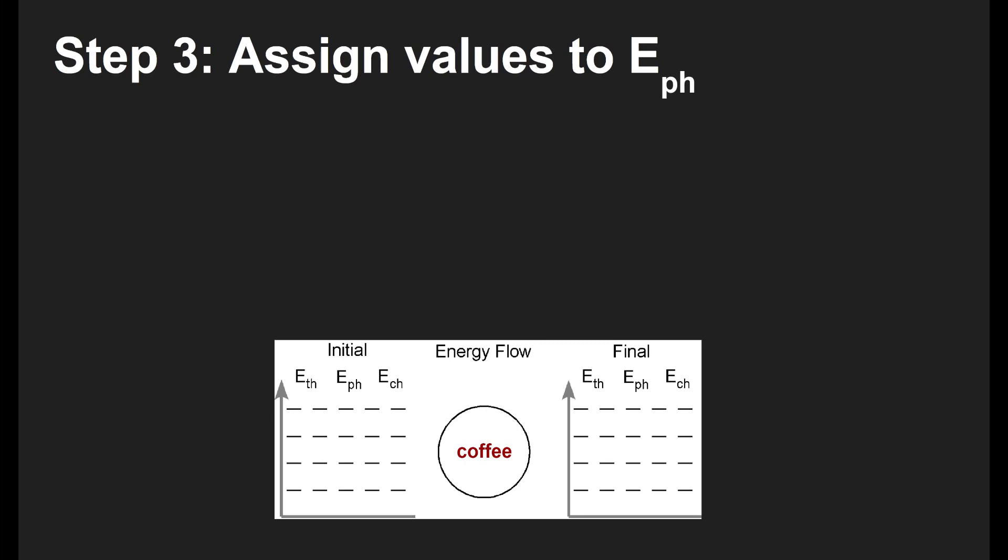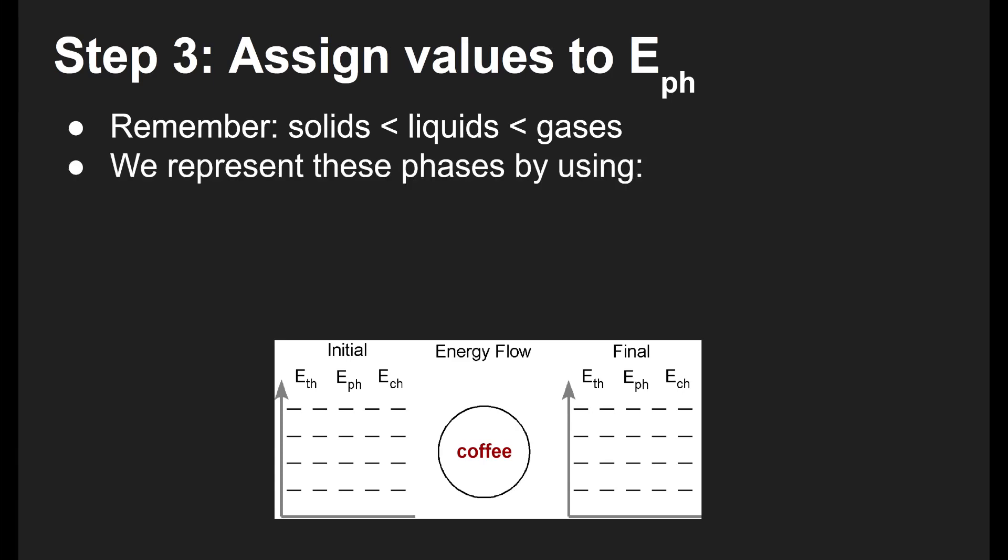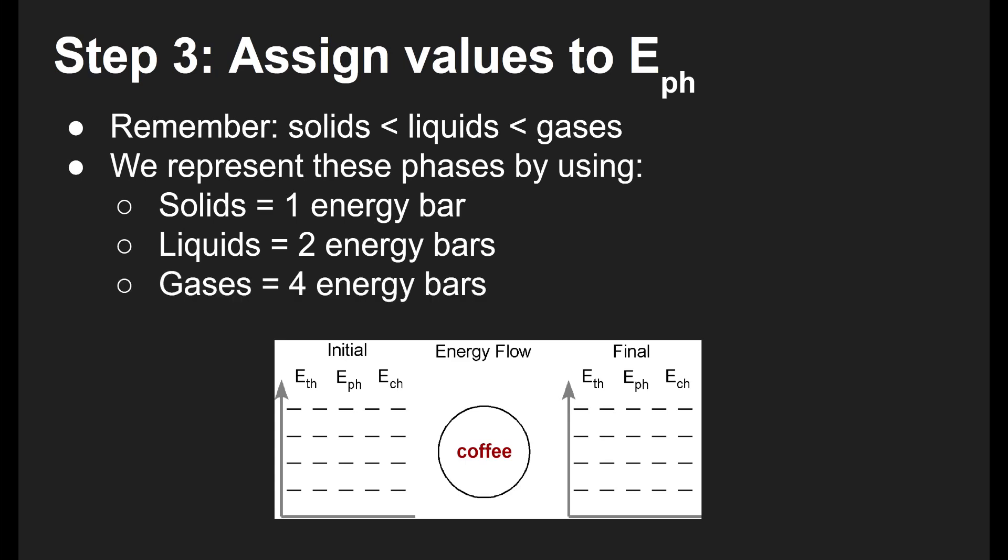All right, so we know we're just going to ignore chemical energy for now. But let's think about the phase energy. Now, earlier, I said solids have the least amount of phase energy, because the stored energy is a potential energy. And they have very strong bonds that don't have a lot of potential energy. Liquids have sort of a medium amount and gases have the most. So we are going to assign certain numbers of bars to each one based on its energy. So solids, we're just going to give one energy bar because they have very low energy. Liquids, we're going to give two because it's a little bit more. And gases, because it's actually quite a lot more energy, we're going to jump up to four energy bars. So these are something you'll have to remember: solids are one, liquids are two, gases are four. So in this case, the coffee starts as a liquid. So we're going to give it two energy bars. And then it also ends as a liquid. So that's also two energy bars for the after.